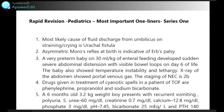A very preterm baby on 30 ml/kg of enteral feeding developed sudden severe abdominal distension with visible bowel loops on day 6 of life. The baby also showed temperature instability and lethargy. X-ray of the abdomen showed portal venous gas. The staging of necrotizing enterocolitis is 2b here.